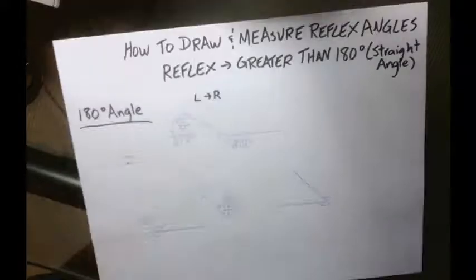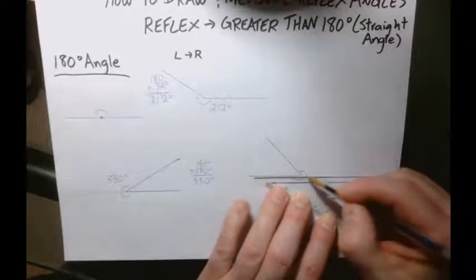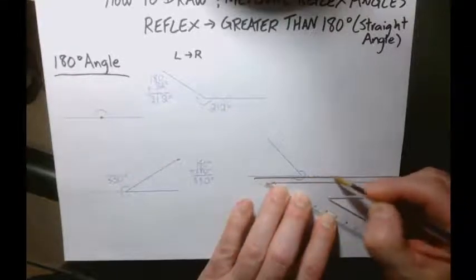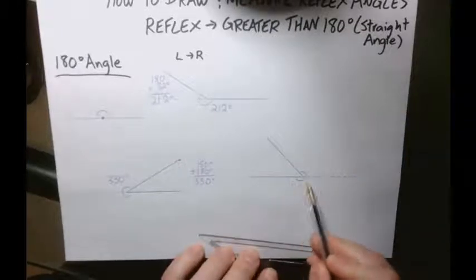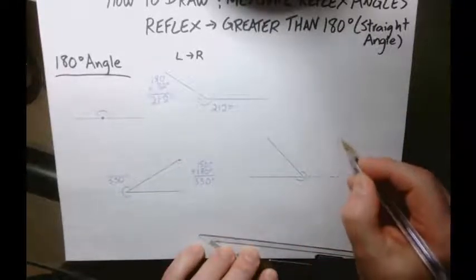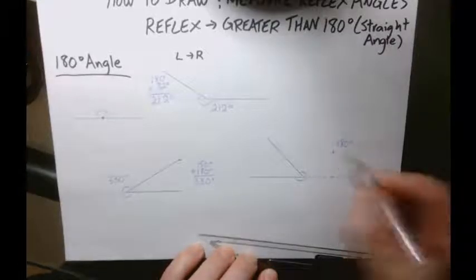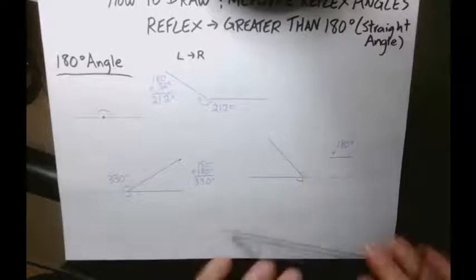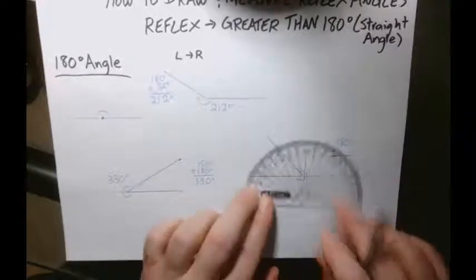So you're going to have to imagine this is like your straight line. What is this measurement? Well, that's 180 degrees. So we know that 180 needs to be added to whatever this angle is. So we take our protractor, line it up.